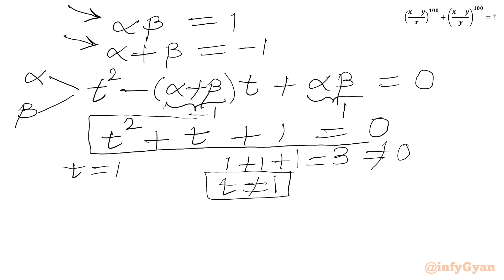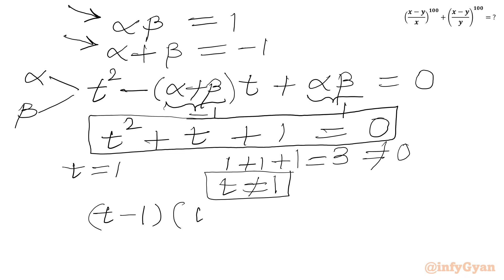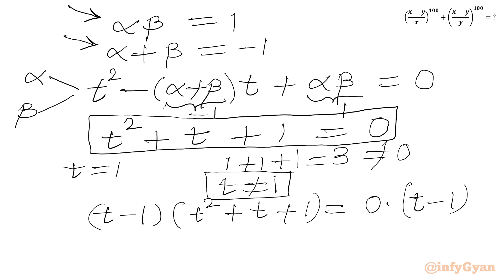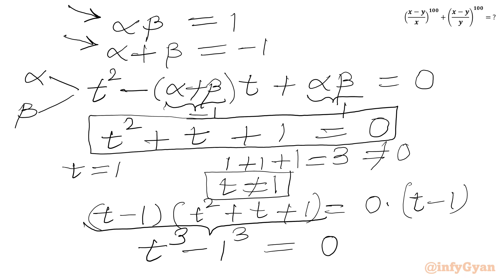From the LHS we can apply the algebraic formula: t cubed minus 1 equals t minus 1 times t squared plus t plus 1. Since t squared plus t plus 1 equals 0, the RHS becomes 0 times t minus 1, which is 0. Remember, t cannot be equal to 1. We will add 1 to both sides and get t cubed equals 1.